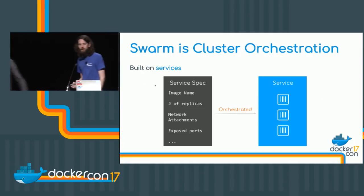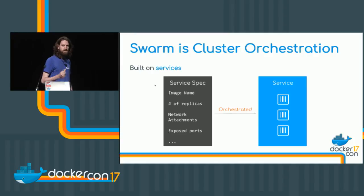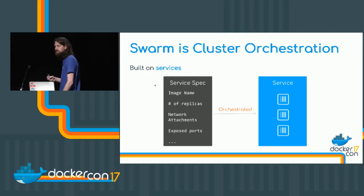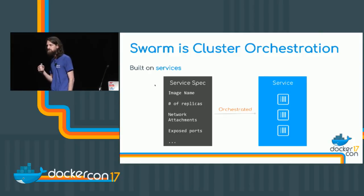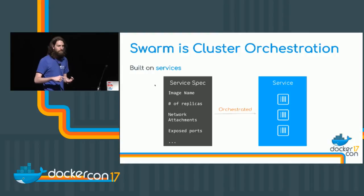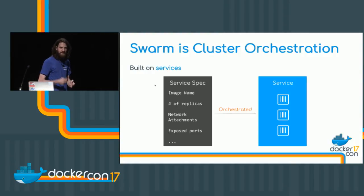Swarm uses an abstraction called a service. A service is composed of many tasks, which are just containers. When you create a service through the CLI or the API, what you're actually creating is something called a service spec. The spec contains everything that service needs to run — the image name, the number of replicas, ports exposed, environment variables, anything that the containers in that service need.